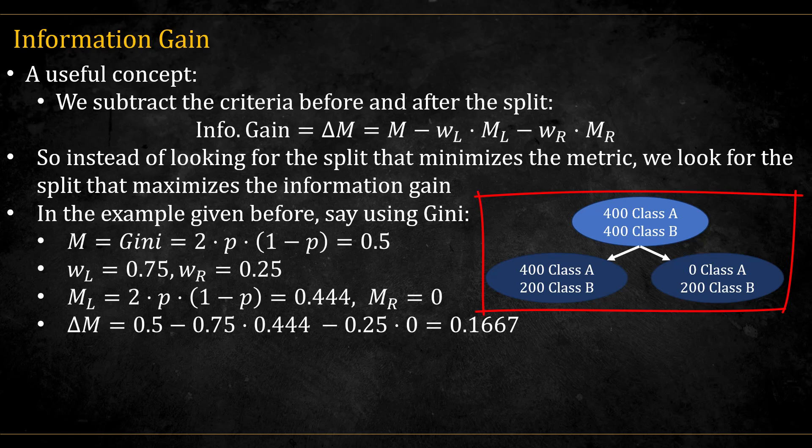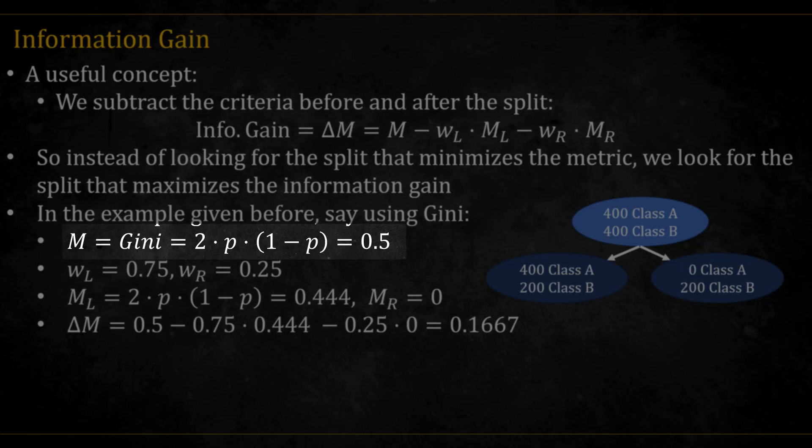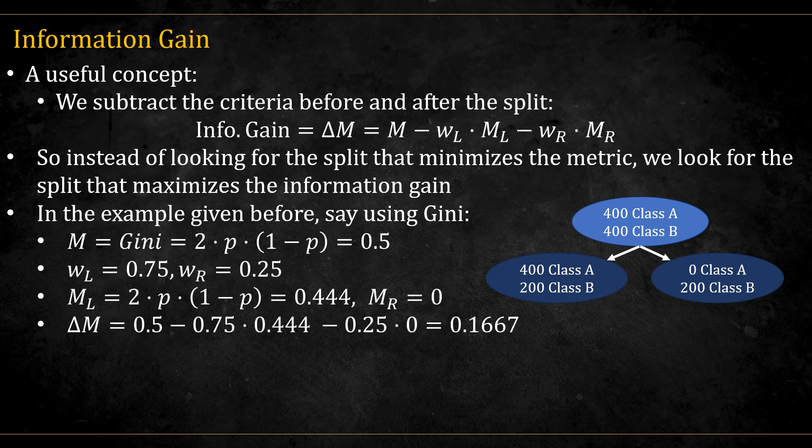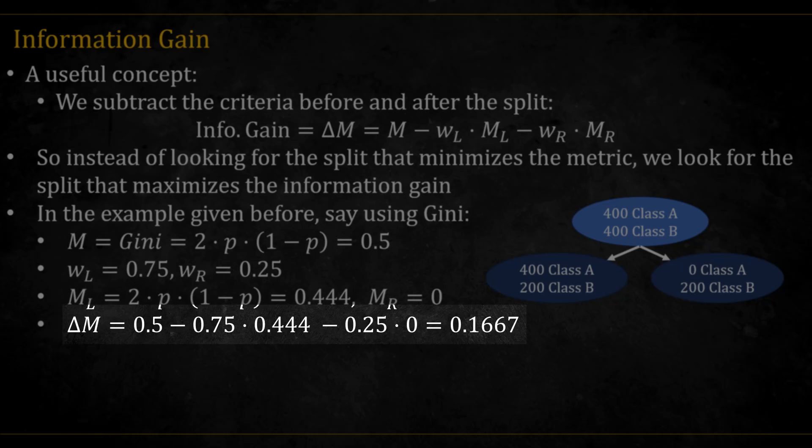In the example given before, if we calculate the information gained by this split, we get that before the genie is 0.5 because p is 0.5, the genie for the left node is 4 ninths because p is equal to a third, and for the right it's zero because p is equal to zero. And putting it all together, we find that this split gave us an information gain of 0.1667.